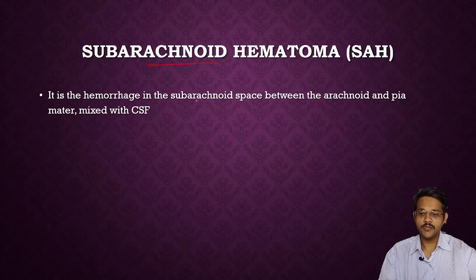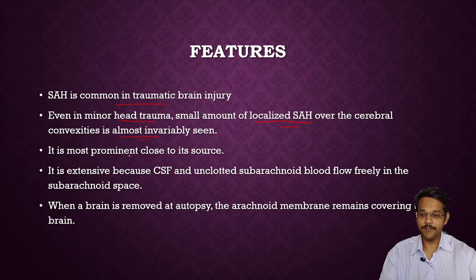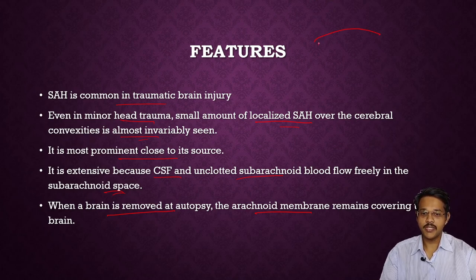Subarachnoid hemorrhage is hemorrhage occurring in the subarachnoid space, between the arachnoid and the pia mater, mainly mixed with CSF. Subarachnoid hemorrhage is common in traumatic brain injury; even in minor head trauma, small amounts of localized subarachnoid hemorrhage over the cerebral convexities are almost invariably seen. It is most prominent close to its source. Because CSF flows freely in the subarachnoid space, bleeding becomes extensive and compresses the brain equally.